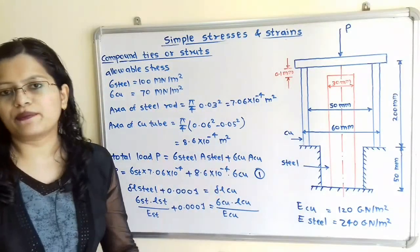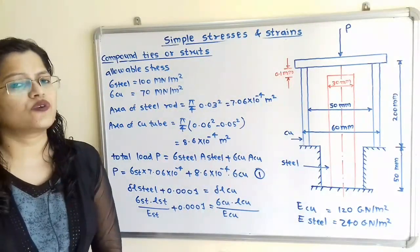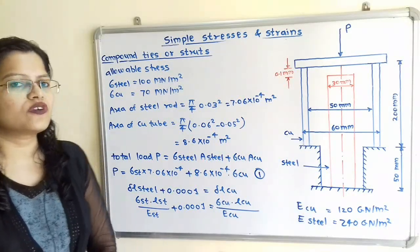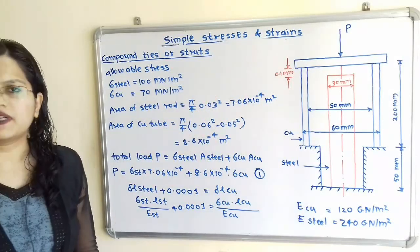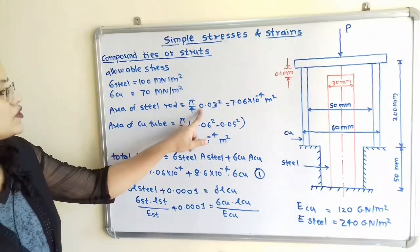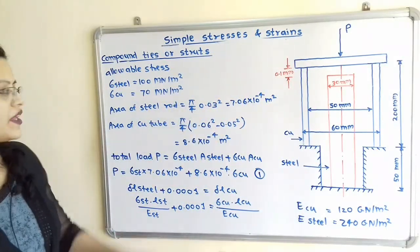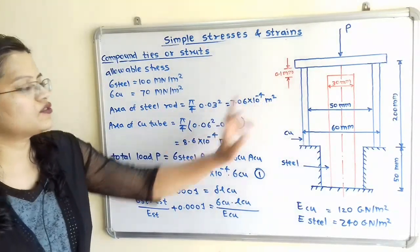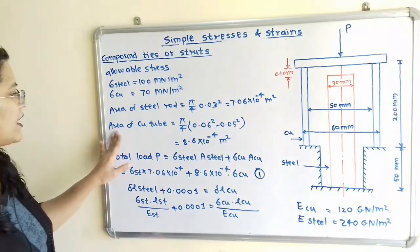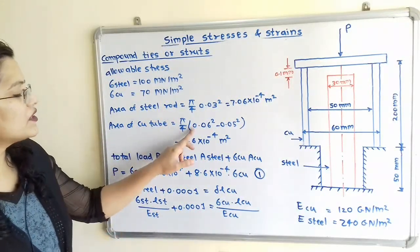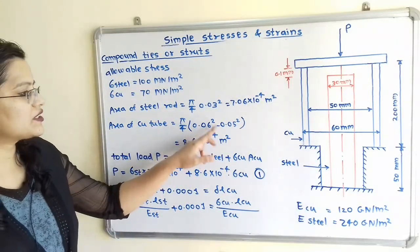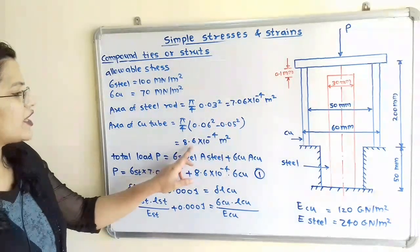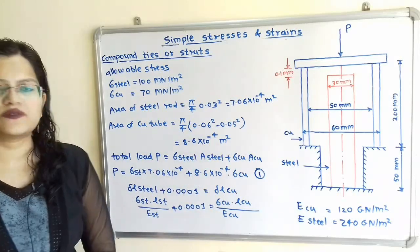To calculate P, we first need the area of the steel rod and the area of the copper tube. Using the formula (π/4)D², with diameter in meters: area of steel rod = π/4 × (0.03)² = 7.06 × 10⁻⁴ m². Area of copper tube = π/4 × [(0.06)² − (0.05)²] = 8.6 × 10⁻⁴ m².